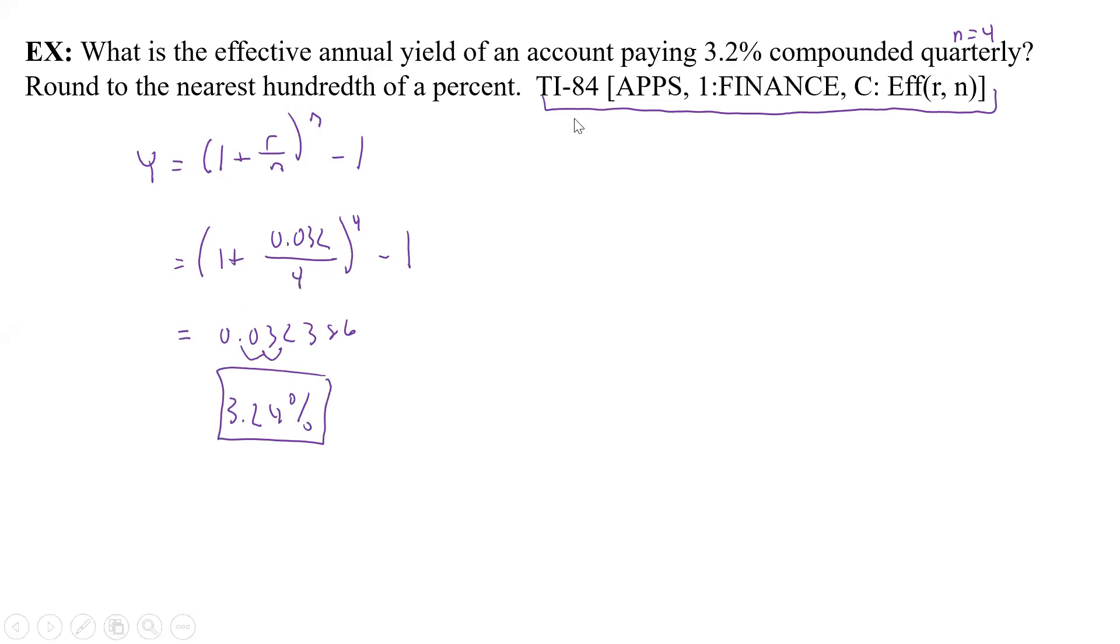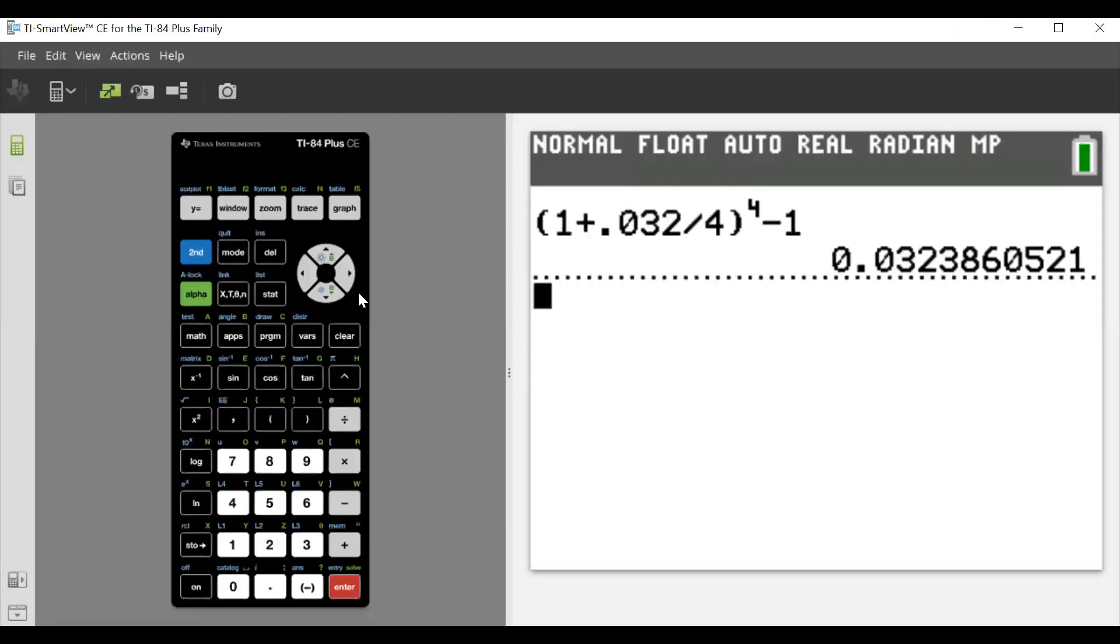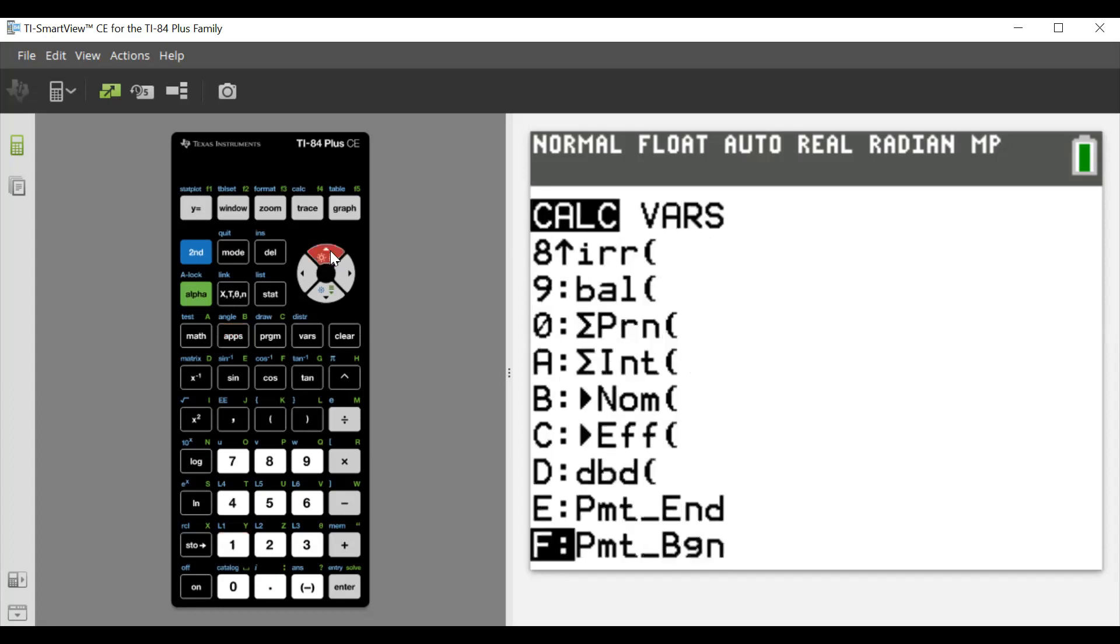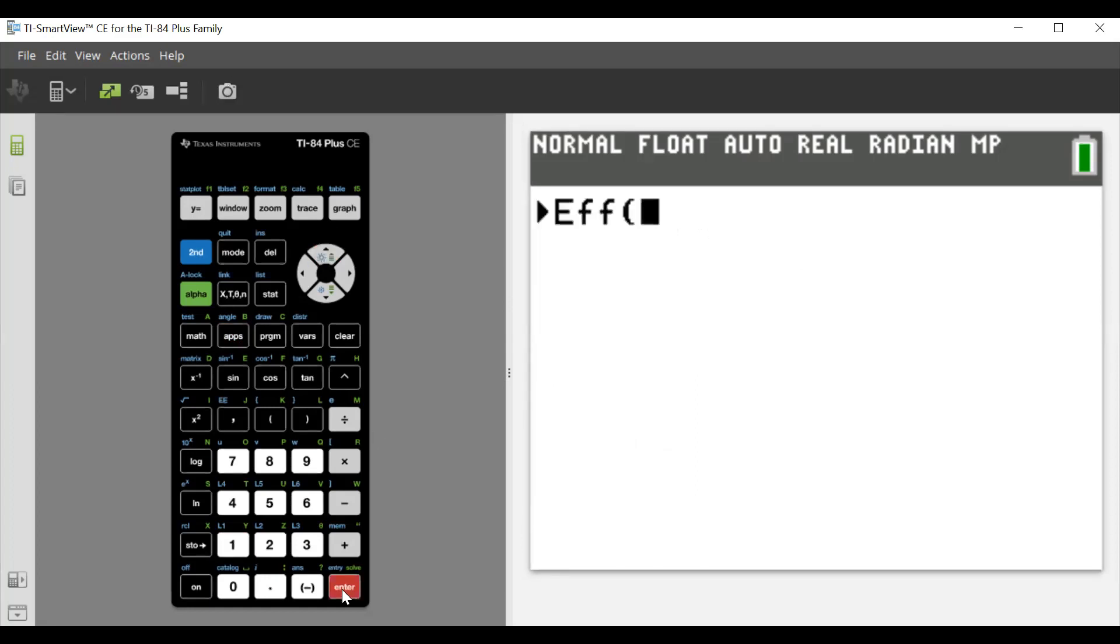Now, if everybody has an 84 calculator or maybe even an 83, we can use our calculator to do this. Let's clear this out. We're going to hit apps, which is right here. And then we're going to do 1, which is the finance. Then we're going to arrow up because we have to go up here and we want this effective. That's going to be our effective annual yield. Now we're going to plug in the rate. We're going to plug in the rate as actually the decimal. We're not going to convert it to a decimal, we're going to put it as a percent. Number of times per year. Now we have to put comma, we did it four times per year, and then close parenthesis.